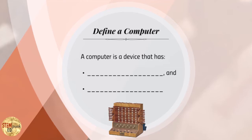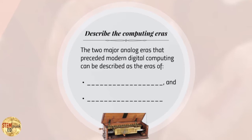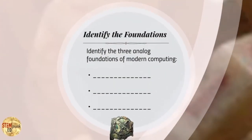As we go through here, look for the following important ideas to remember. First, a proper definition of a computer that can describe it in any of its forms. We're going to describe the computing eras and what I call the two major analog eras that preceded modern digital computing. And lastly you'll be able to identify three analog foundations of modern computing, three things that had nothing to do with digital when they were found, yet they are the basis of modern digital computing.